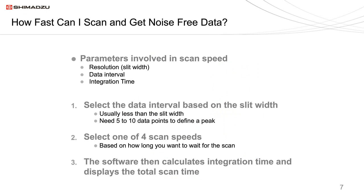In most modern instruments, you don't enter the scan speed directly — it is usually derived from the slit width, the data interval, and the integration time. Many competitors allow you to enter all three of these, which leads to a lot of trial and error and noisy spectra. Shimadzu has a better plan: first you select the slit width, then agree on a data interval — usually less than the slit width, with five to ten data points needed to define the peak. After that, you select one of four scan speeds: fast, medium, slow, or very slow. The software then calculates an appropriate integration time and displays the total scan time.